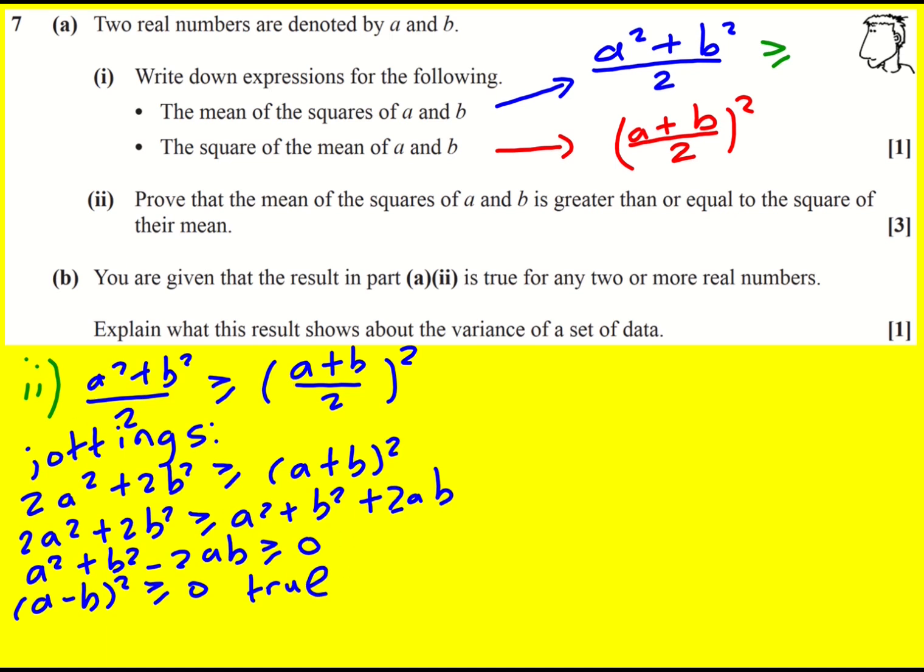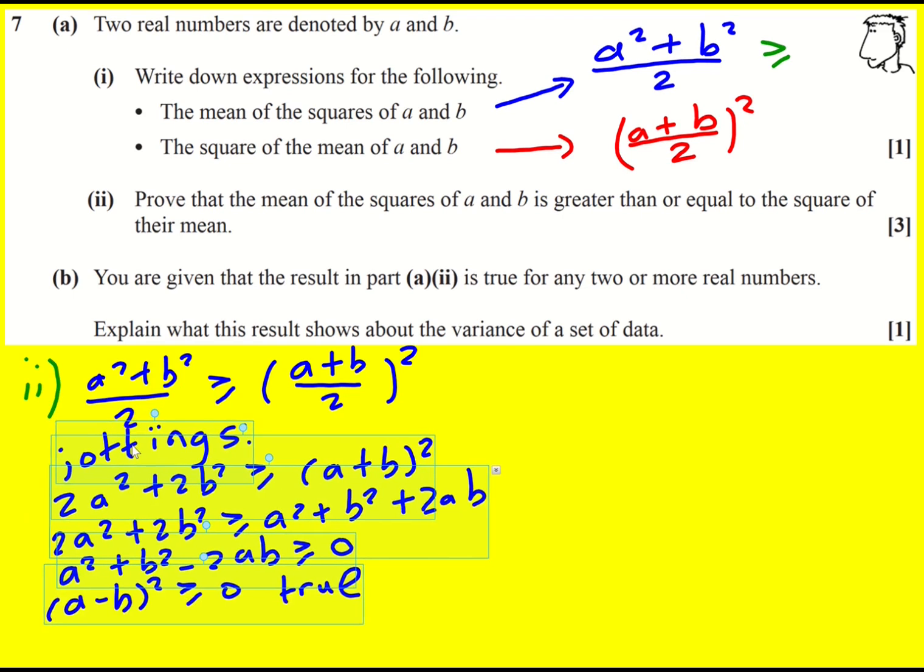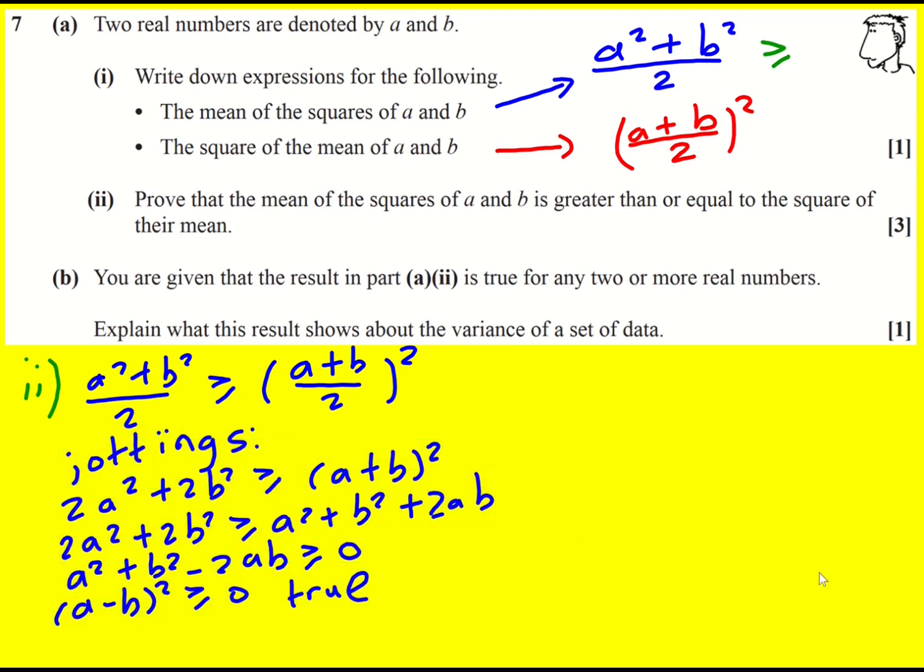Now that's not quite a proof, because we've only shown that we're going from left to right. Although in this case, you can justify it to yourself using the if and only if relationship, that it's going to go the other way as well. So we can start out by saying this if and only if.